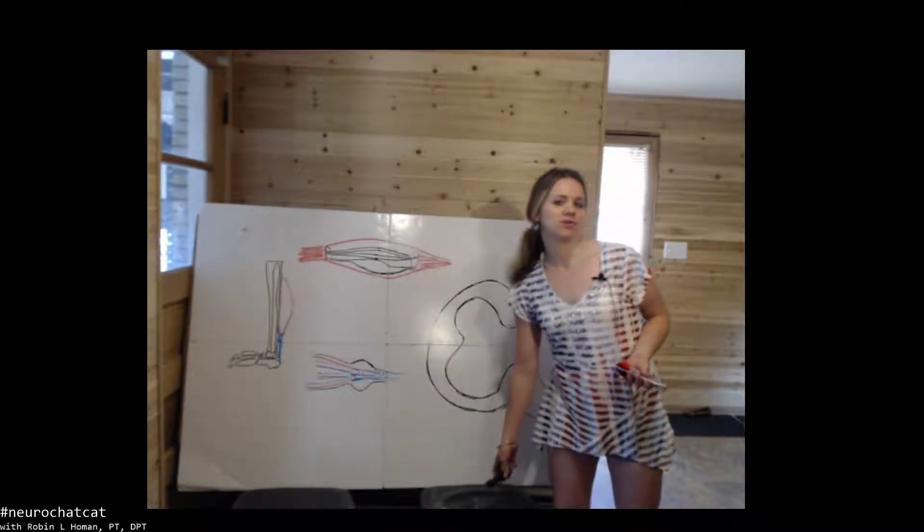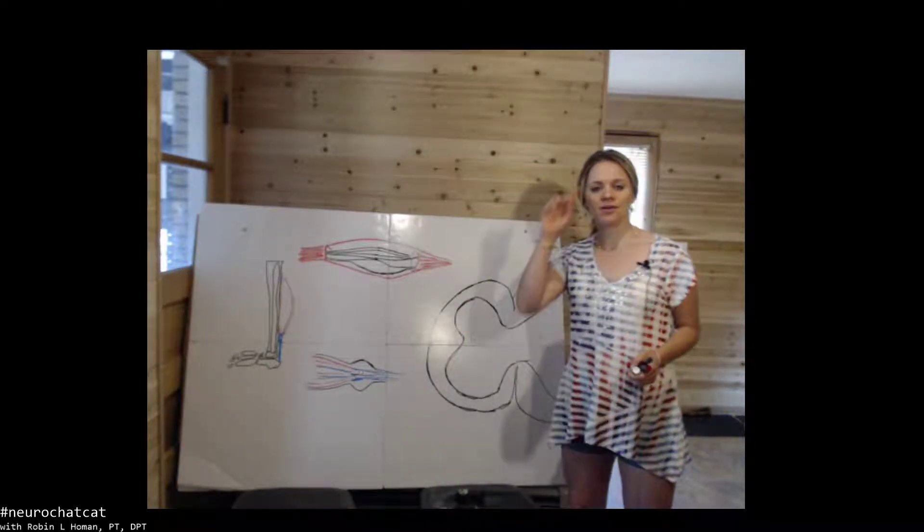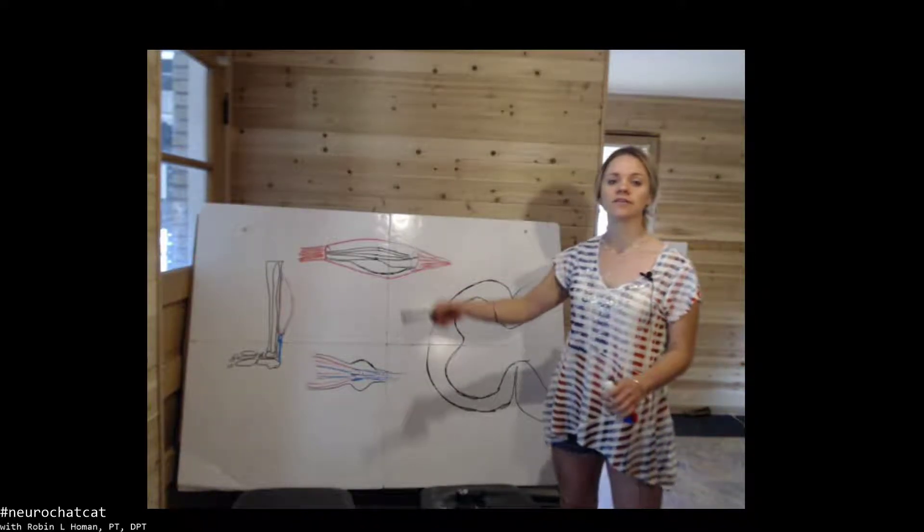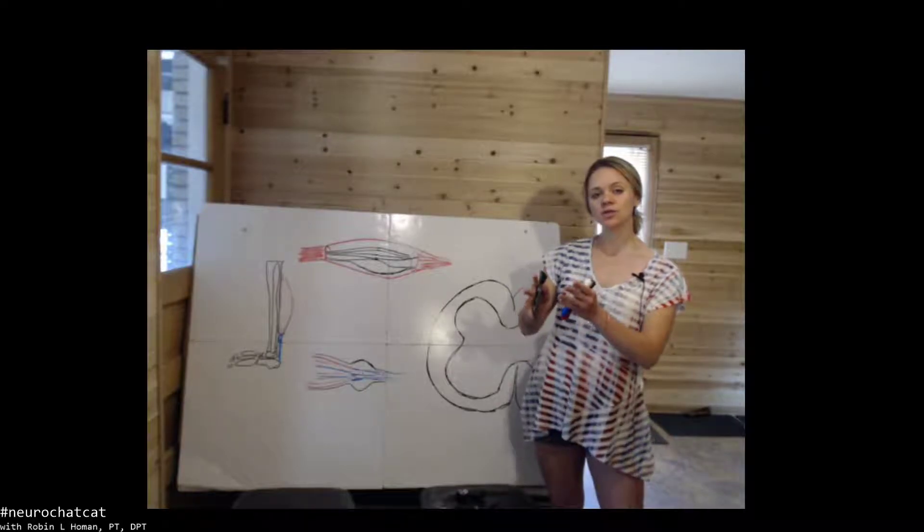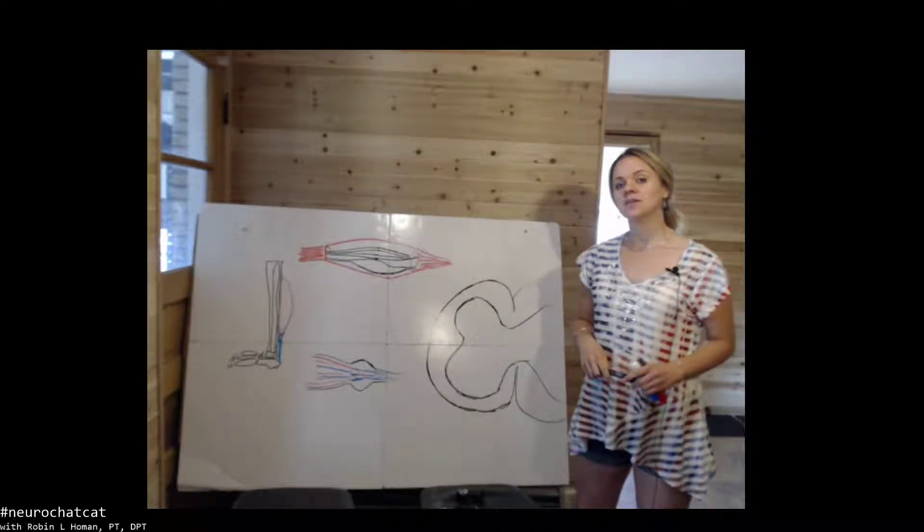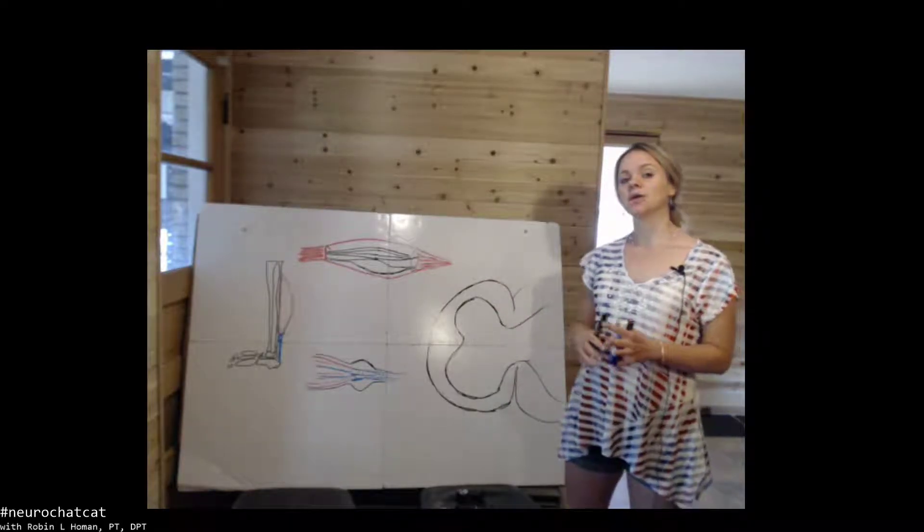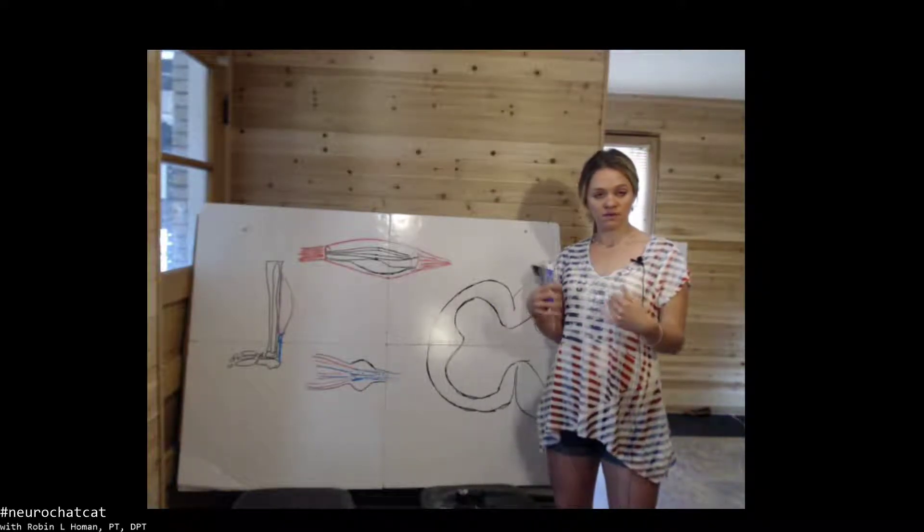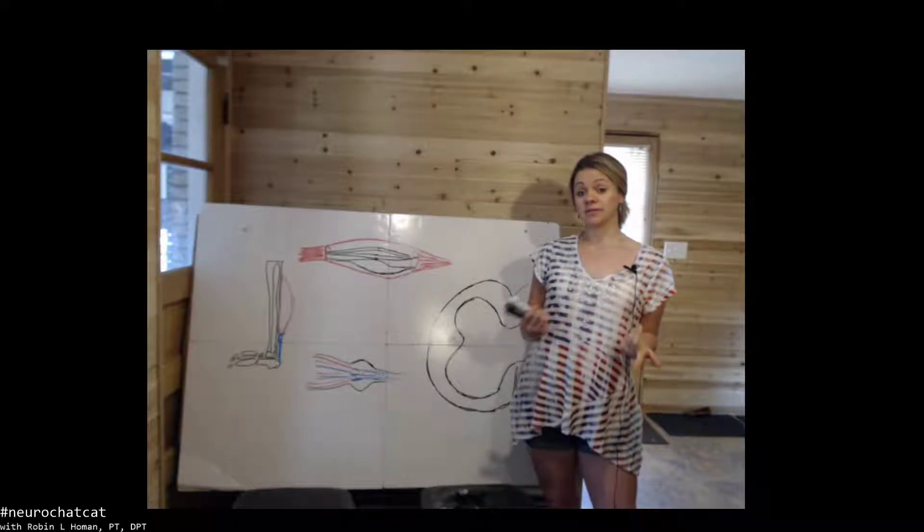Hi everyone, this is Robin Holman from NeuroCat Chat. Today we are here to talk about how our body is able to take mechanical compression and tensile load forces to provide neural input into the central nervous system to aid in the process of developing our body schema of our egocentric awareness of space. Ego means self, so where am I in relation to myself?